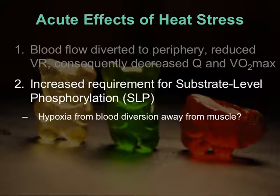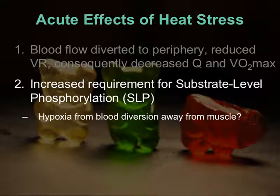That was the primary effect of exercise in the heat. That reduced blood flow compromises and sets off a cascade of factors that results in eventual fatigue — reduces cardiac output, reduces VO2 max. What else do we observe during exercise in the heat? We observe an increased requirement for substrate-level phosphorylation — you've heard of this as an increased reliance on anaerobic metabolism. This is energy coming from glycolysis or creatine phosphate.